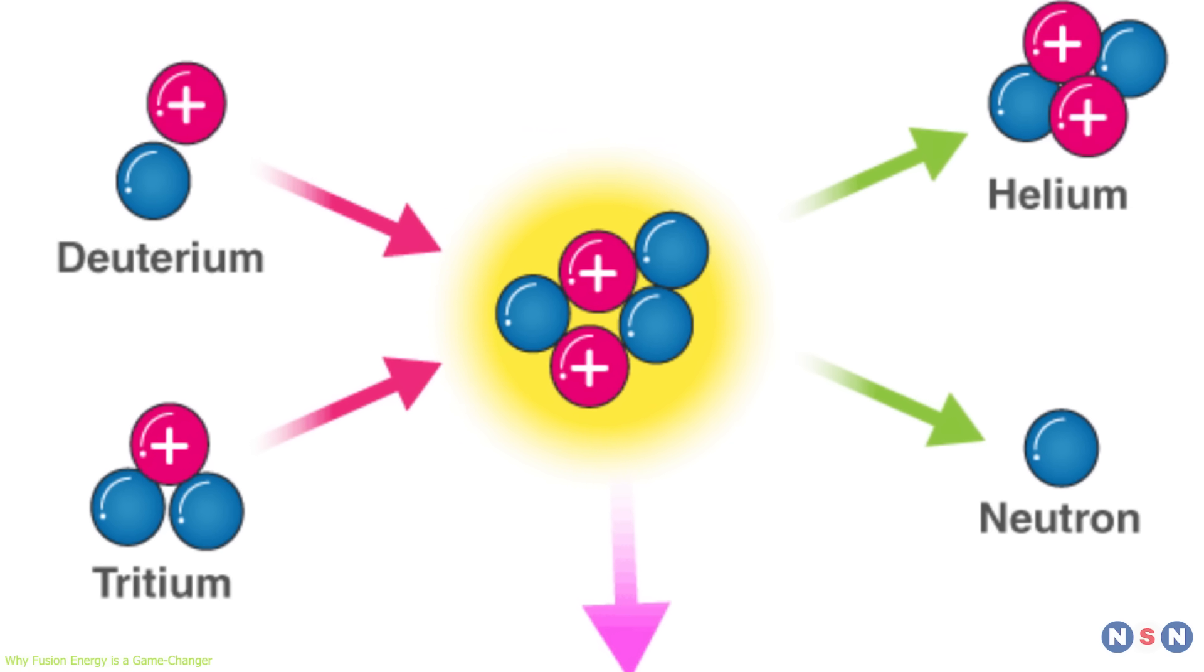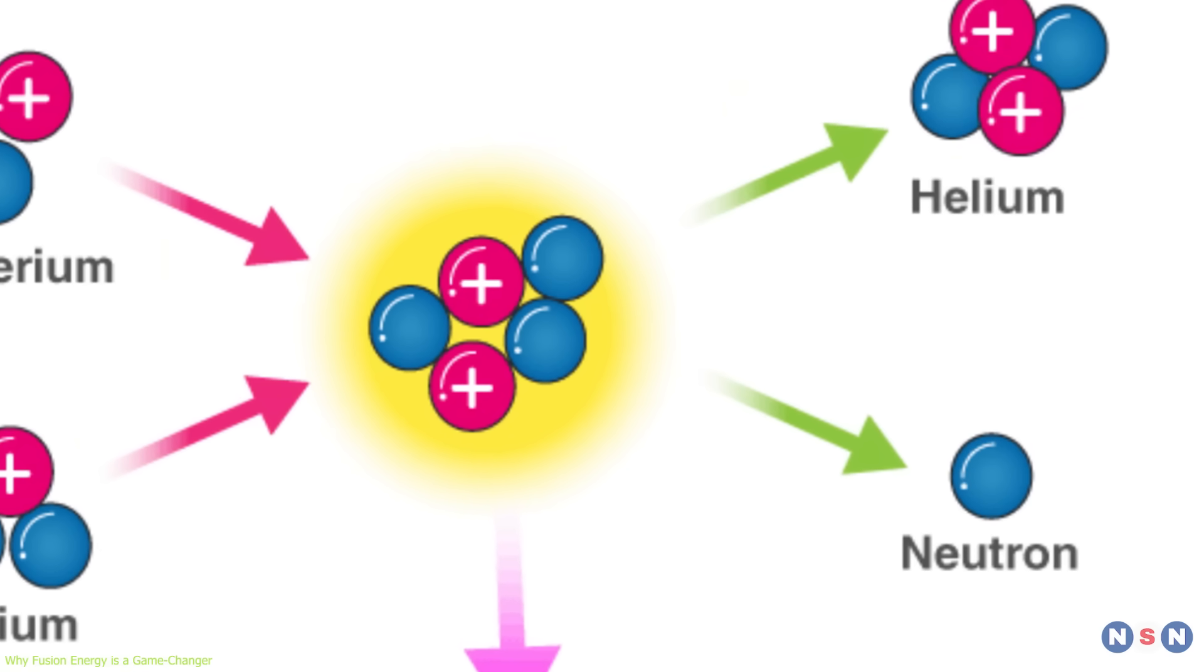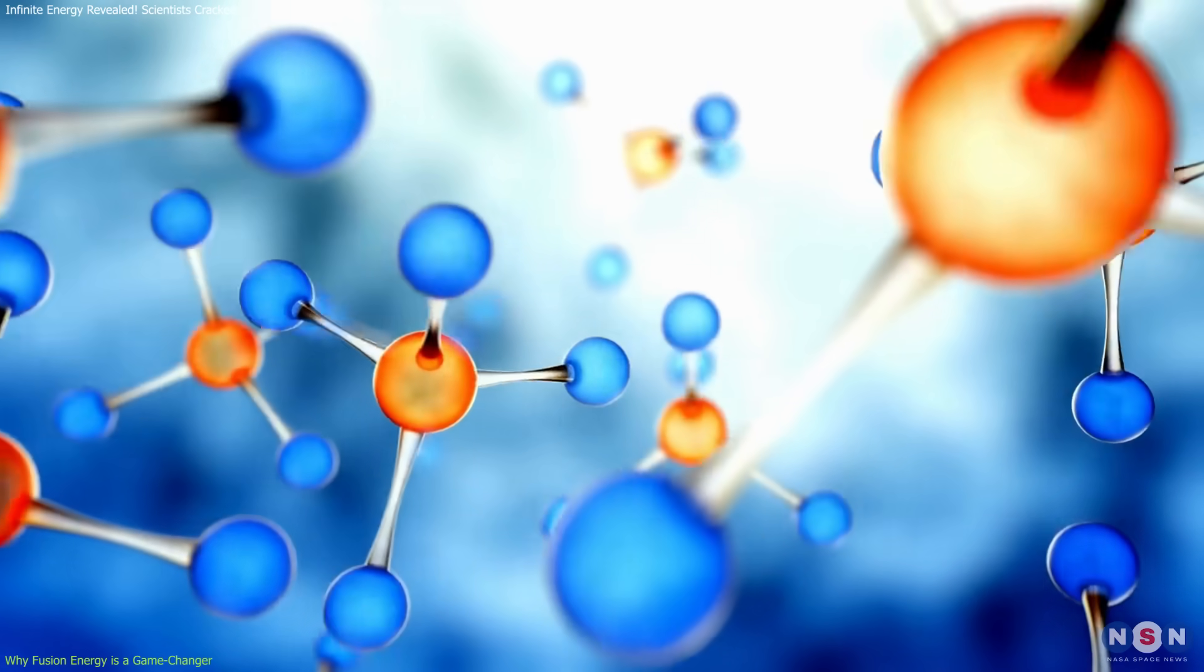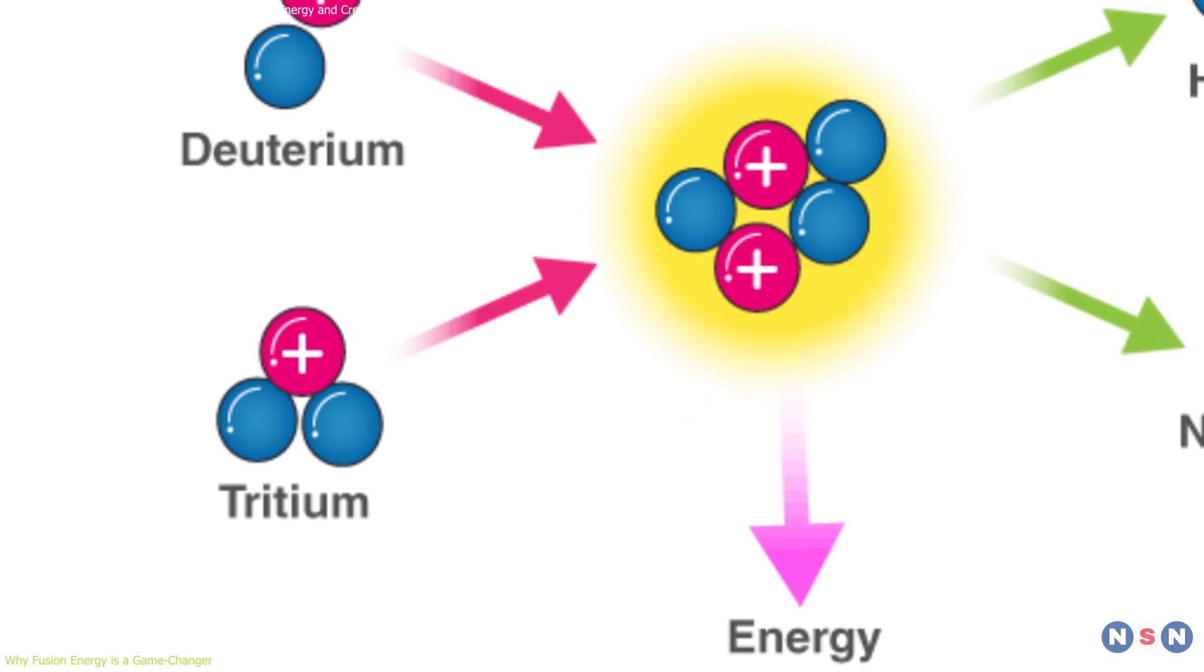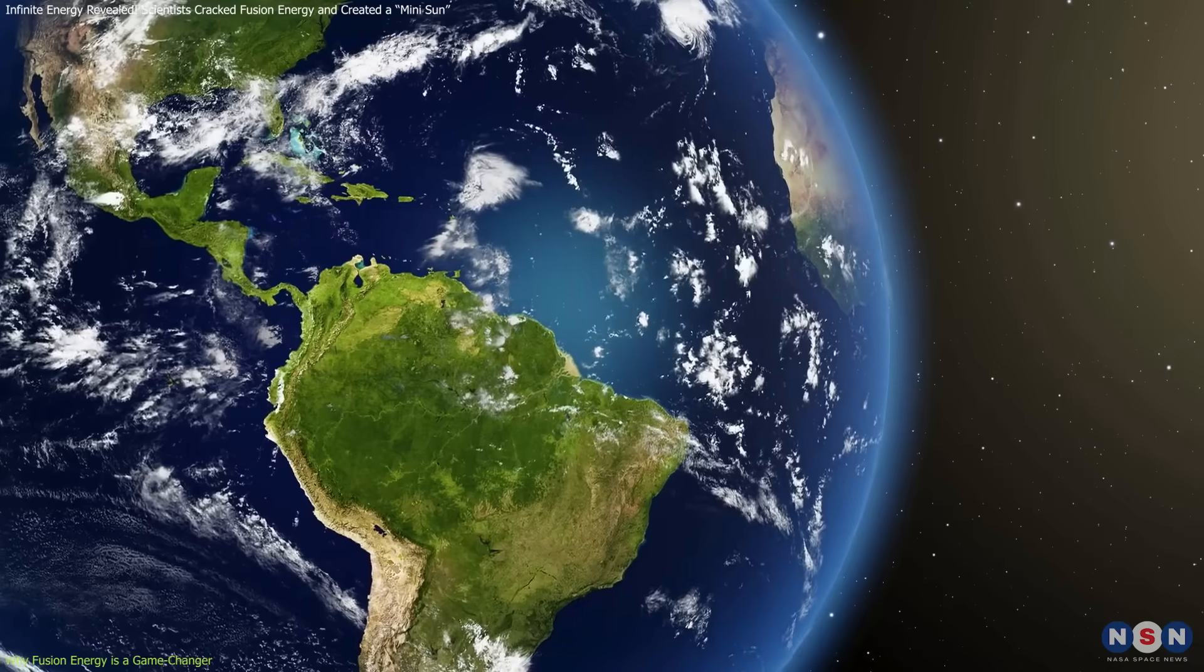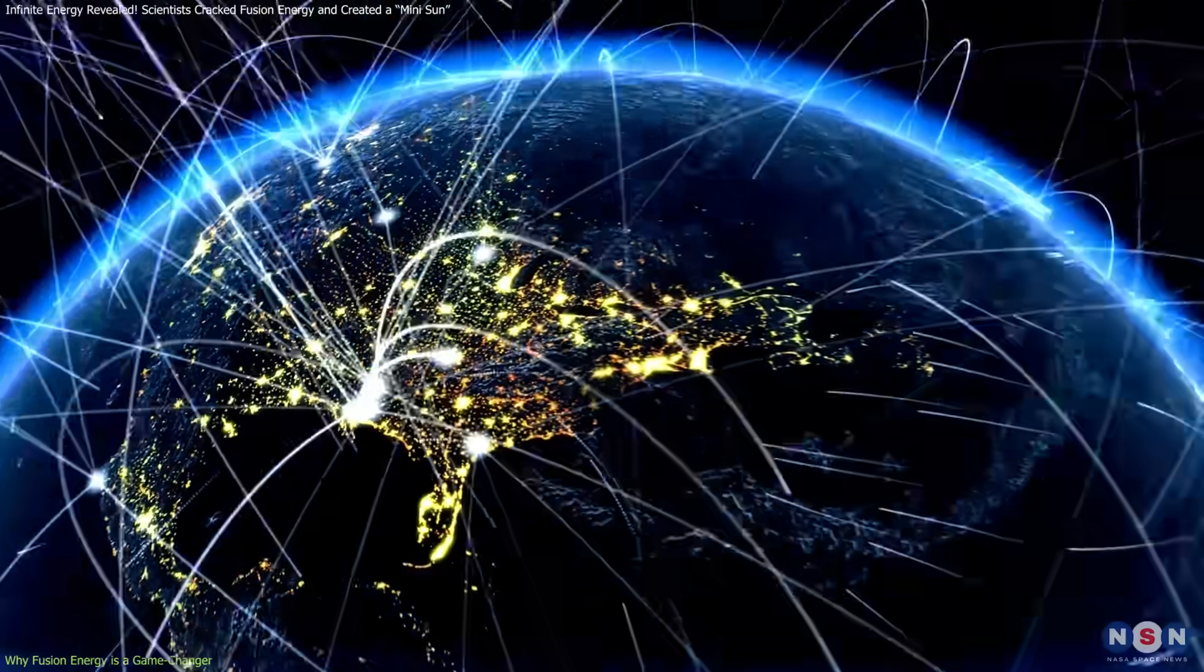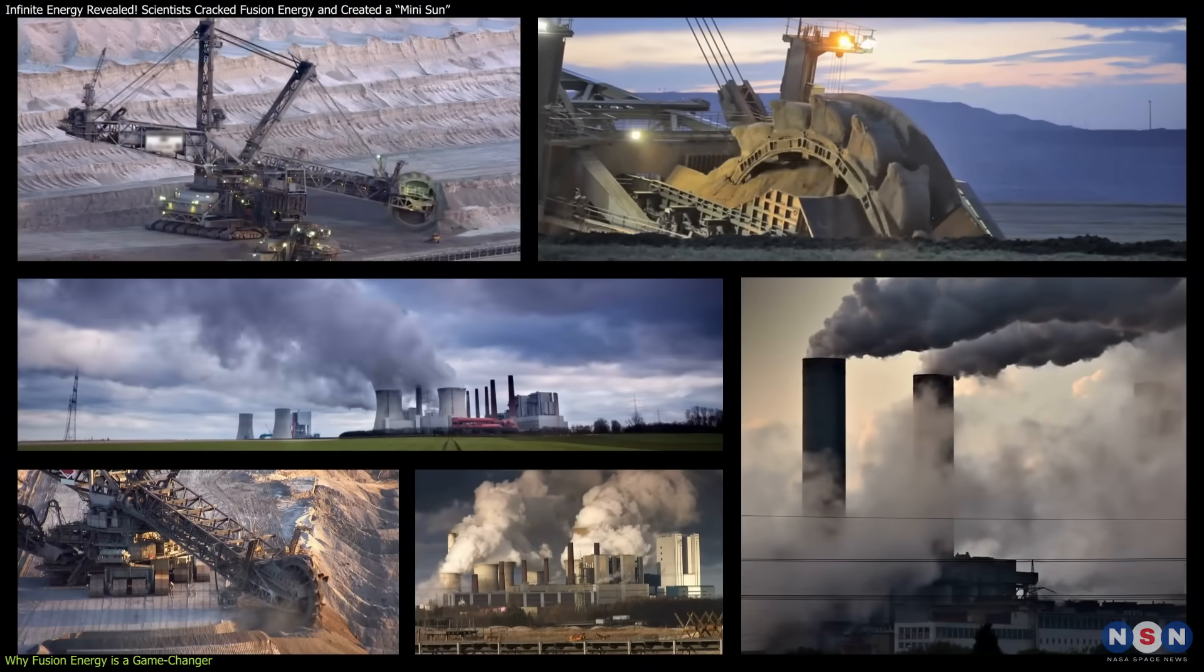Fusion relies on hydrogen isotopes like deuterium and tritium, which are found in nature. Deuterium is abundant in seawater, with about 33 grams per cubic meter, meaning we have millions of years worth of fuel available. Tritium, on the other hand, is rare, but it can be produced from lithium, a material that is widely available on Earth. Because fusion fuel is so abundant and renewable, fusion energy could power civilization for centuries, eliminating the need for fossil fuels entirely.